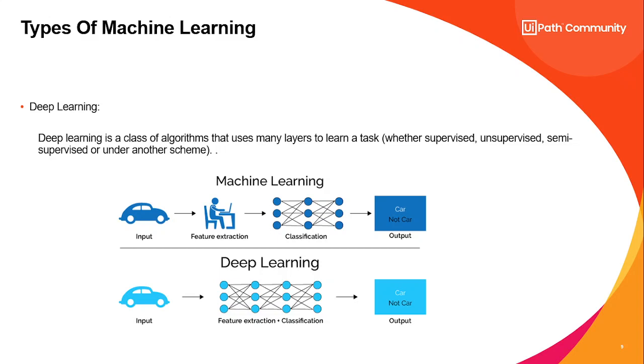It mainly relates to neural networks. If you see here, in general ML, we have an input, extract features, classify, and output will be car. The car image will be the input, we do feature extraction, classification is done, and we output it as car or not car. Deep learning gives an input, and based on neural networks, it classifies, extracts features, and gives output as car or not car. That's simply about deep learning.